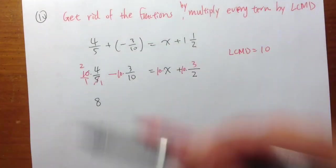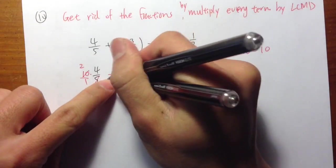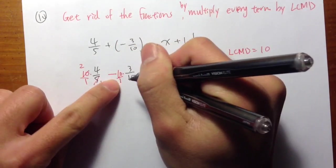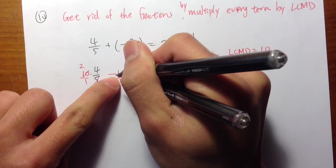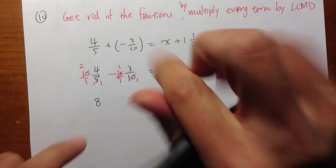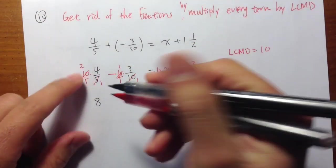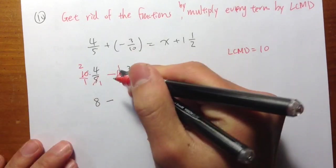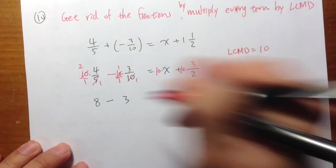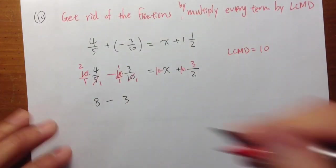And for the next one, 10 times 3 over 10. Let me write the 10 as 10 over 1. And the 10 goes into 10 once. 10 goes into this 10 once as well. So they cancel out. And I have just a subtraction. Let me write down subtract. 1 times 3, which is just 3, over 1, which is just 3.